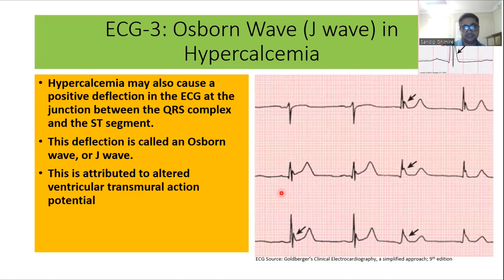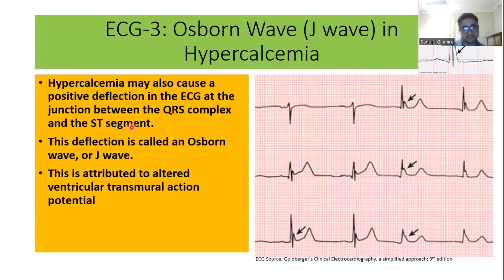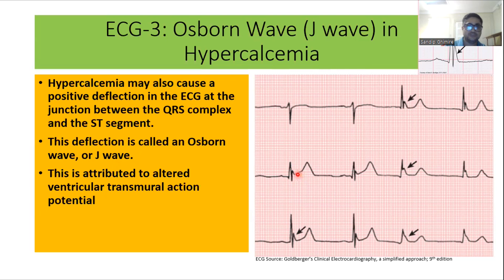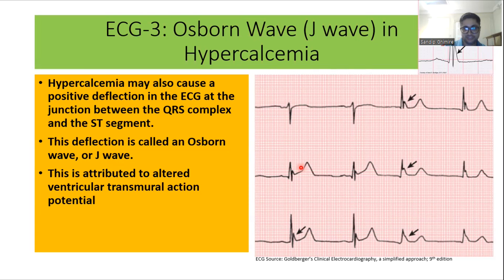This third ECG shows Osborne waves, also called J waves, in hypercalcemia. A J wave is a positive deflection on the ECG at the junction between the QRS complex and the ST segment. This positive deflection at the end of the QRS complex is attributed to altered ventricular transmural action potential. Osborne waves are a feature of hypercalcemia, but may not be seen in all patients unless hypercalcemia is very severe.